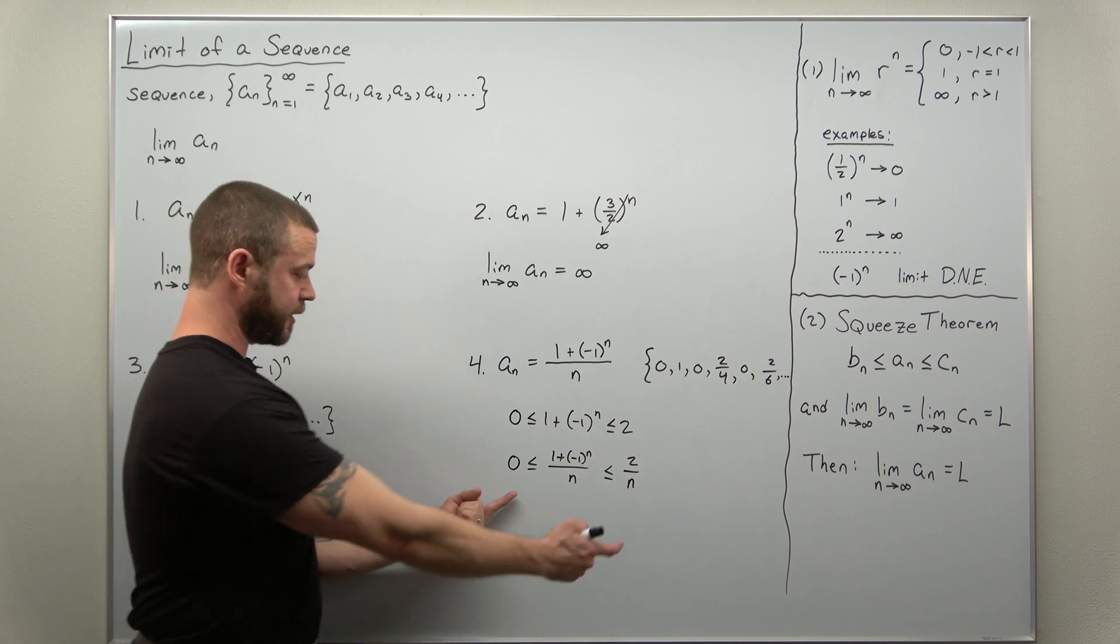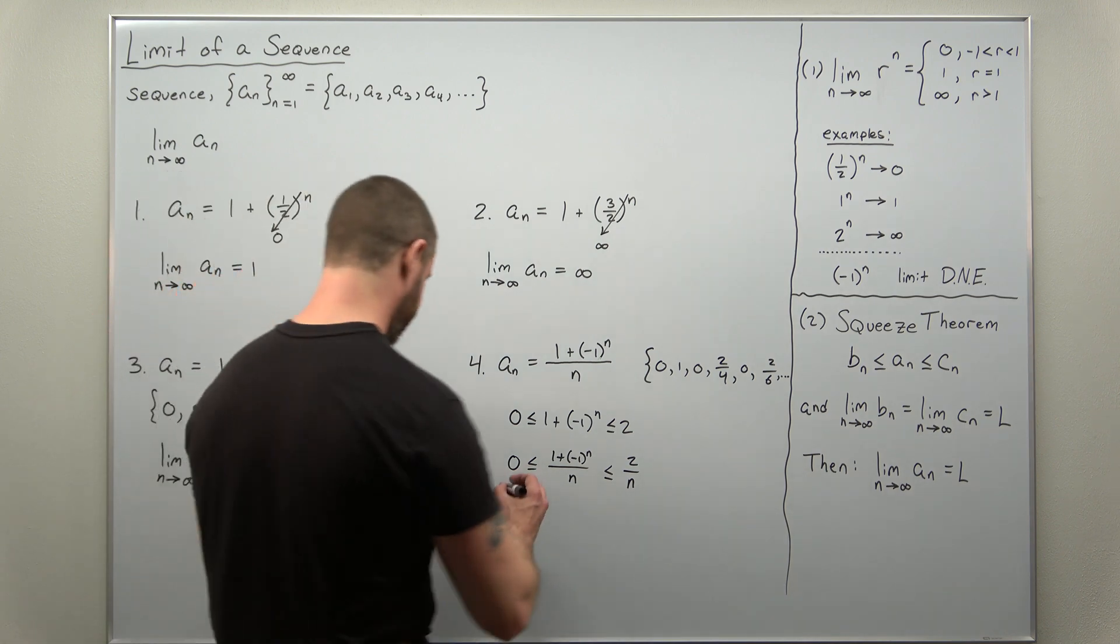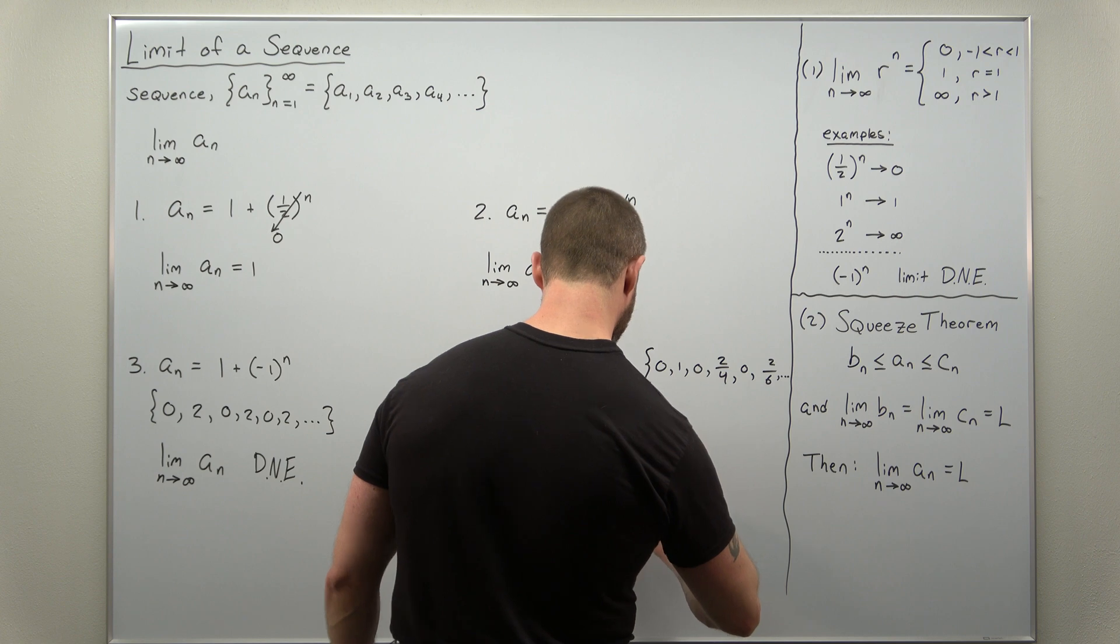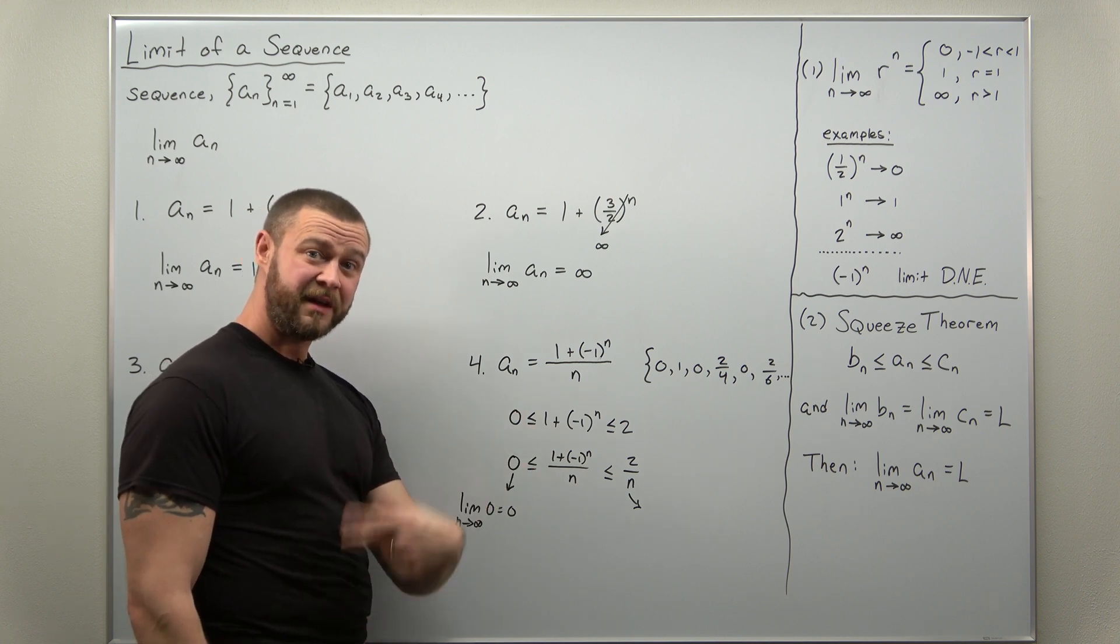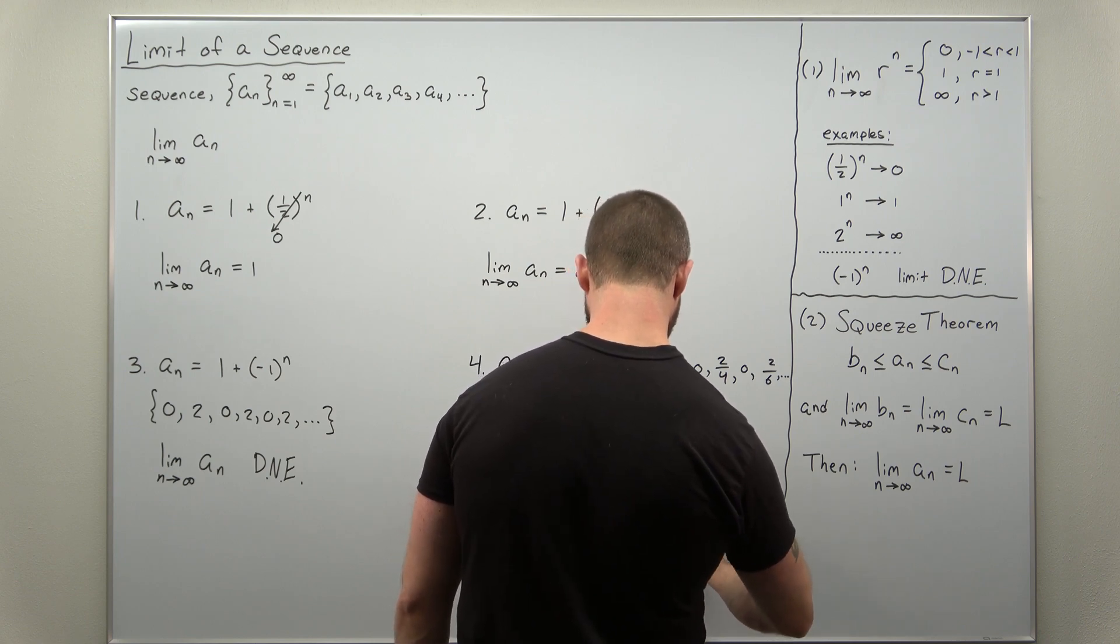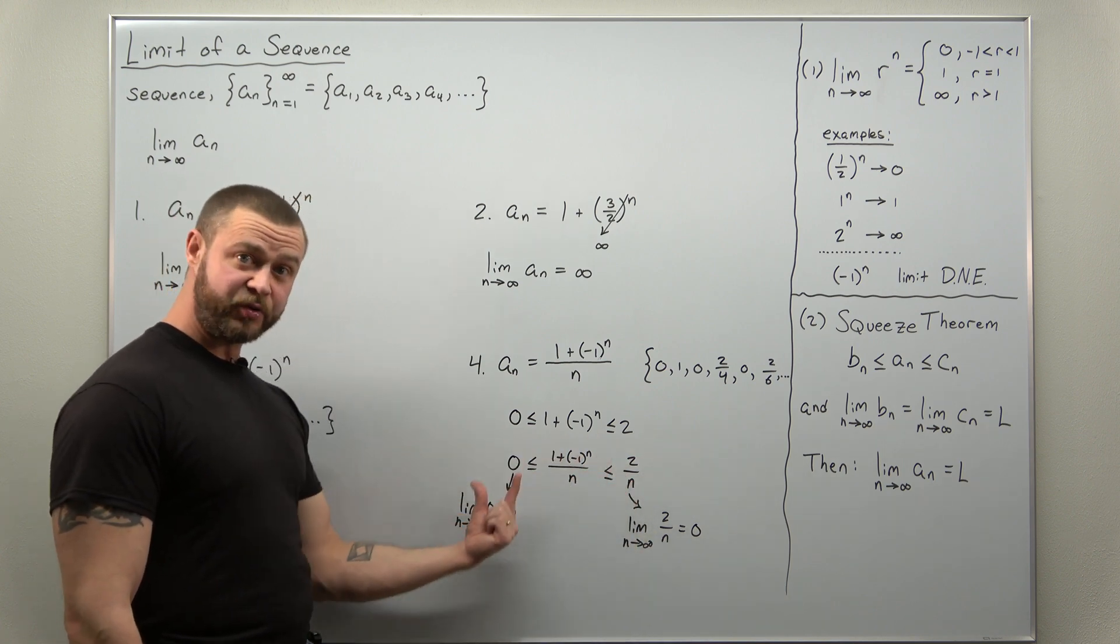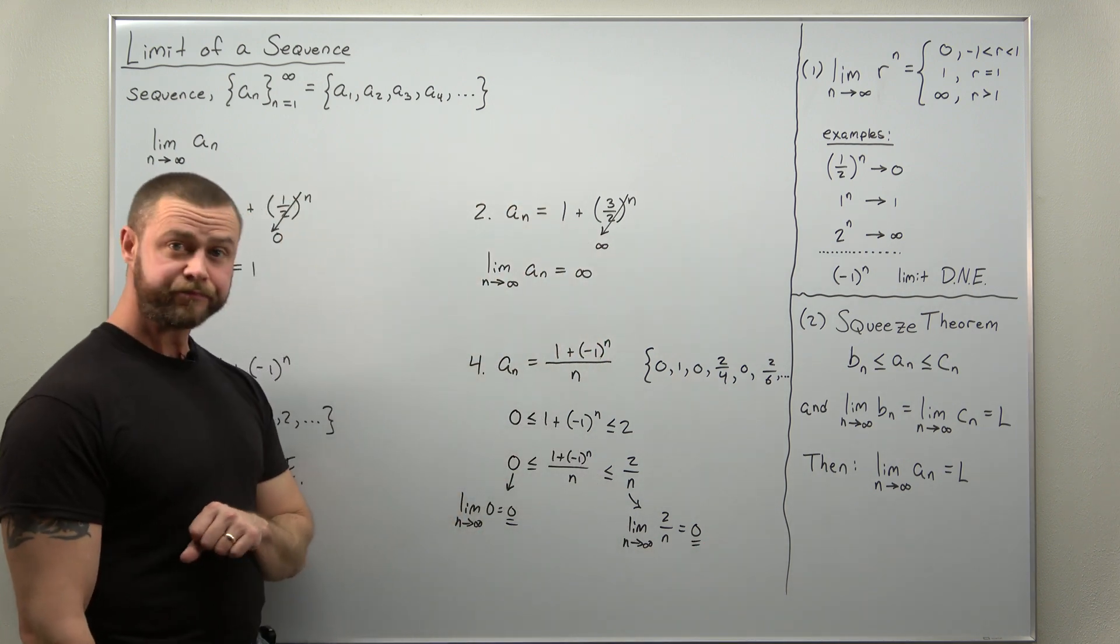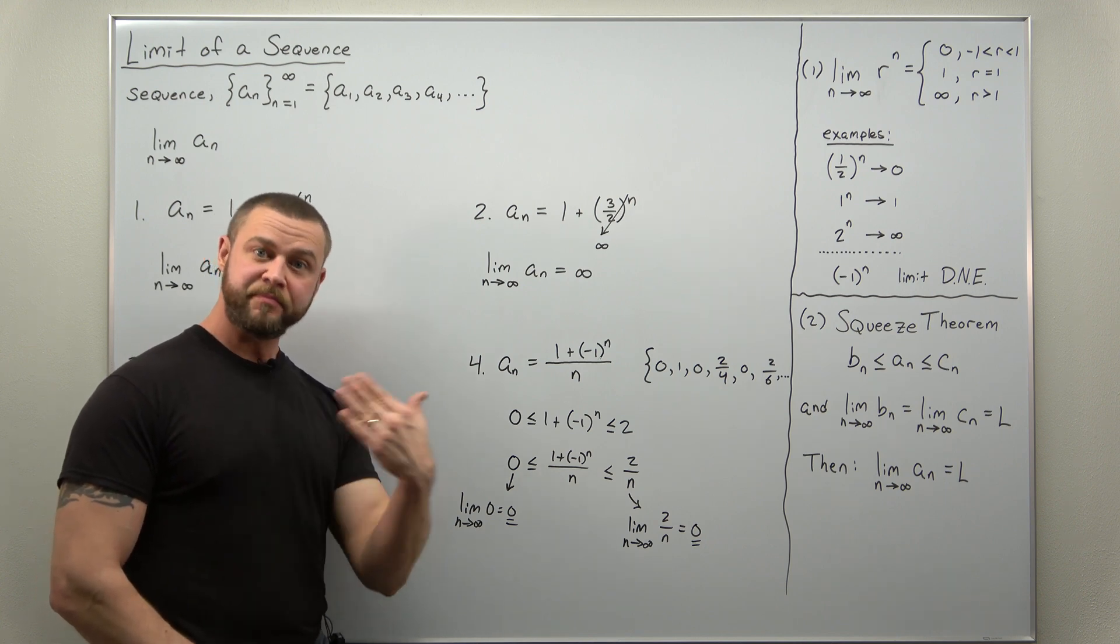And what we want to check with the squeeze theorem is what happens to the ends, the bigger and smaller terms. Well, the smaller one just approaches zero. That's just zero. We have a constant sequence and we have two over n. Well, we have an n in the denominator. Your denominator is going to get really big. Eventually, that fraction becomes small. This also approaches zero. So what we have here is our term a sub n squeezed between two other sequences, both of which have the same limit as n approaches infinity. And what we can conclude from the squeeze theorem is the sequence or term in the middle approaches the same limit, in this case zero.